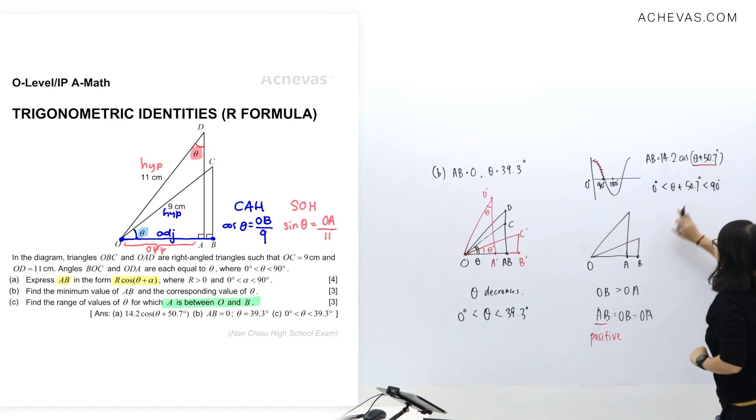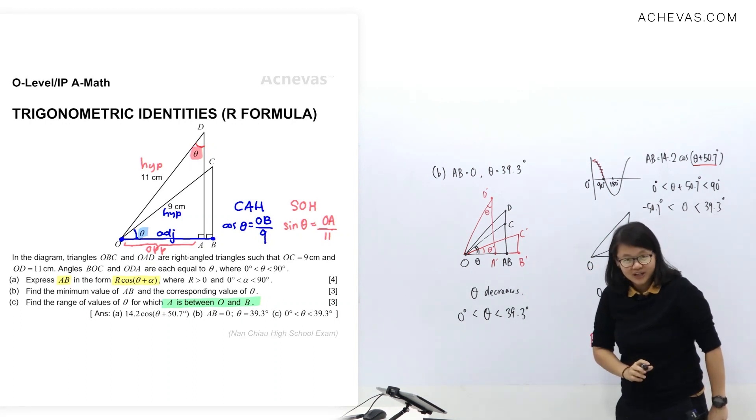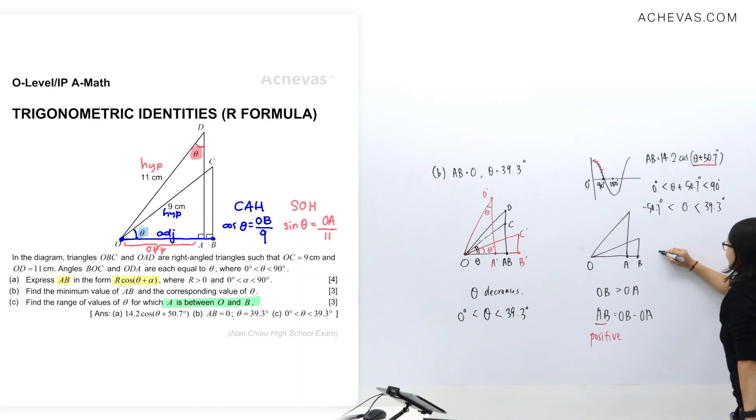So let us minus 50.7 to get theta value. So I'll have theta between 90 minus 50.7 and 39.3 degrees. And since the question says that theta must be more than 0, so therefore theta must be between 0 to 39.3 degrees. So remember to take a look at the question. Although we have answer using graph, but do remember that from the question, we do not have a negative angle. So this will be our final answer.